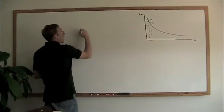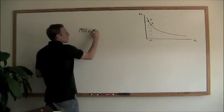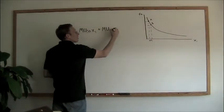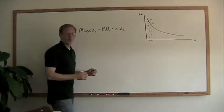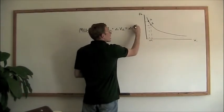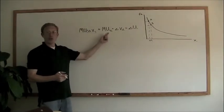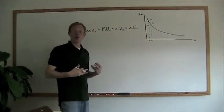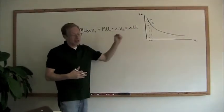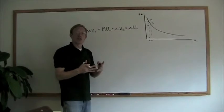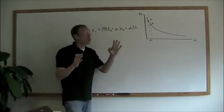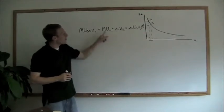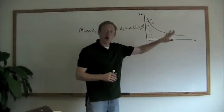We have the marginal utility of good 1 times the change in consumption of x1, plus the marginal utility of good 2 times the change in consumption of x2 — that equals our change in total utility. Now, if we're on the indifference curve, that change in utility should equal zero, because even though we're consuming different amounts of x1 and x2, we're staying on the same indifference curve.